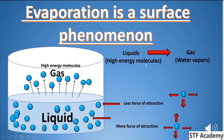Evaporation involves high energy molecules in the liquid escaping as vapors. If you have a liquid, the molecules in the center of the liquid experience forces of attraction from all directions — left, right, top, and bottom. But molecules at the surface only experience forces from the left, right, and bottom — not from the top. So surface molecules, when they gain enough kinetic energy, can break the forces of attraction and escape from the surface.